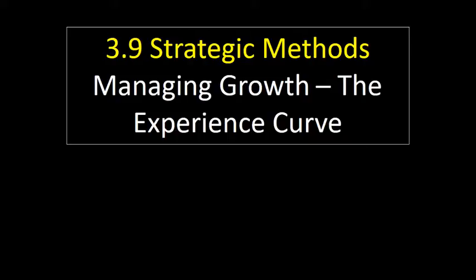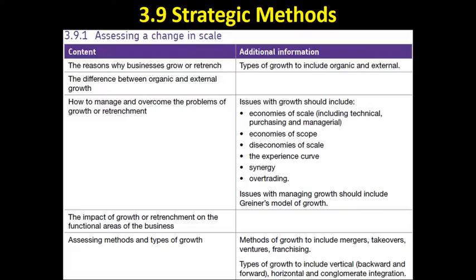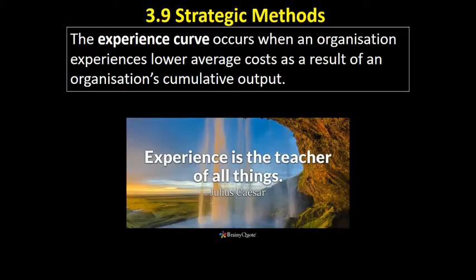This video looks at the experience curve, part of unit 3.9 on issues to do with growth. The experience curve occurs when an organization experiences lower average production costs as a result of their cumulative output — that is, the total number of units they have ever produced over time, leading to lower average costs.